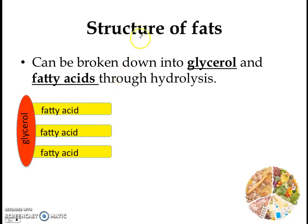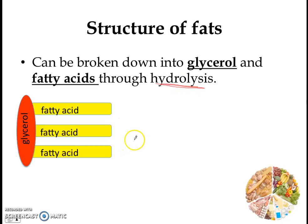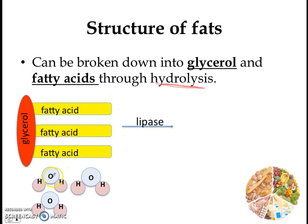So what is the structure of fats? Here is a fat molecule. One fat molecule is made out of 1 glycerol and 3 fatty acids, and every fatty acid is attached to the glycerol. This fat molecule can actually be broken down by hydrolysis — using water to break down. To break down this molecule of fat, I need 3 water molecules, each for each bond between fatty acid and glycerol — 1 bond, 2 bonds, 3 bonds.